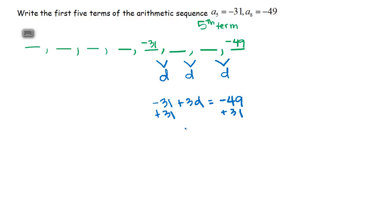Continuing, solve this like you would in Algebra 1. You get negative 18 on the right side, and that means D equals negative 6.